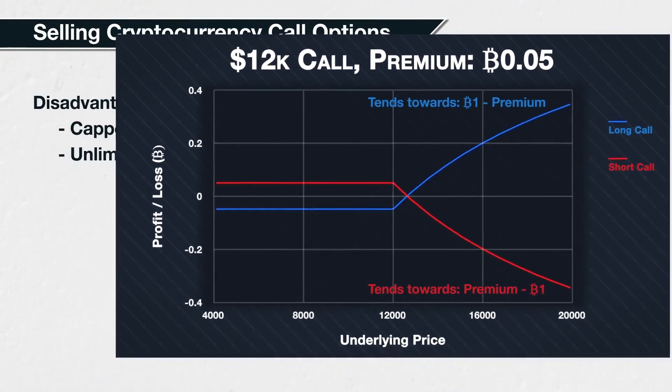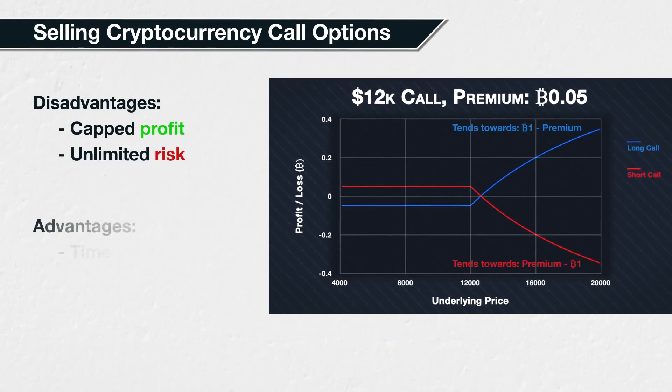Time has the same effect on cryptocurrency options as it does on the options discussed in section 3. Time works against the buyer as it puts a time limit on them being correct. For the seller, this works in their favour. Every day that passes, the option will lose a little bit of its value. The more time that passes without the underlying price increasing, the more value the call option will lose, and the more profit the call option seller will be making.